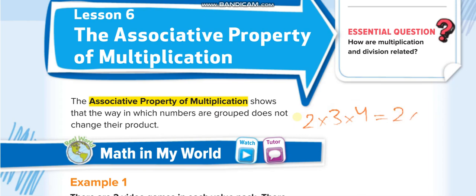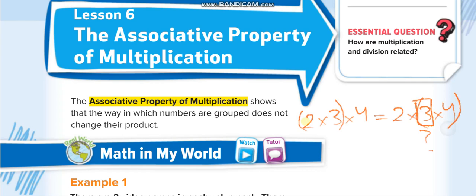On both sides we have the same numbers. For example, if we hide one number and ask you what it is, you can see from the other side there's a three, so it must be three here. In the associative property we make groups — on this side we group two and three, and on that side we group three and four. First, two times three is six, times four; on the other side, three times four is twelve, times two.